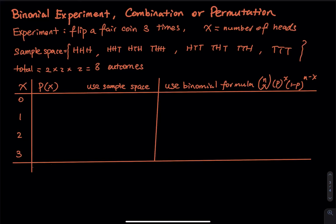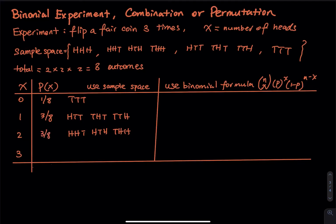We have a binomial distribution table where x can be zero, one, two, or three heads. The probability of no head is tail-tail-tail, which is one of eight outcomes: 1/8. One head — HTT, THT, TTH — is three out of eight outcomes: 3/8. Two heads — HHT, HTH, THH — is also 3/8. Three heads, all H, is 1/8. The sum is 8/8, which equals one. So the sum of all probabilities equals one.